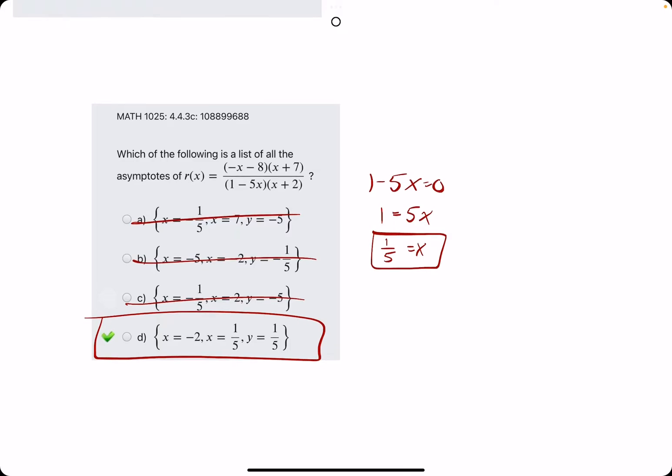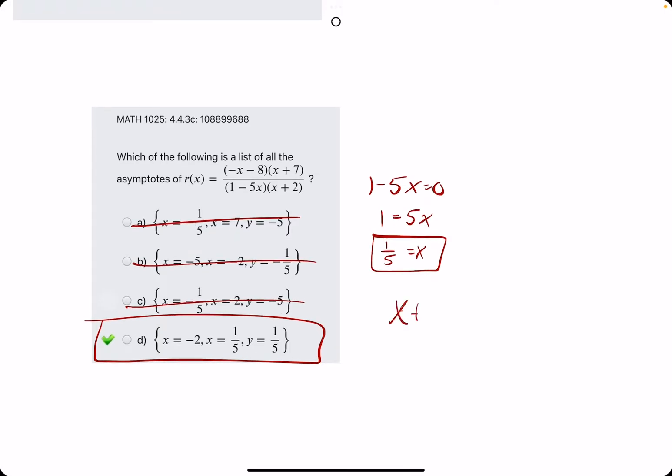Let's talk about where the other values come from, though. X plus two, the other denominator factor equal to zero. We get negative two. That matches option D as well.